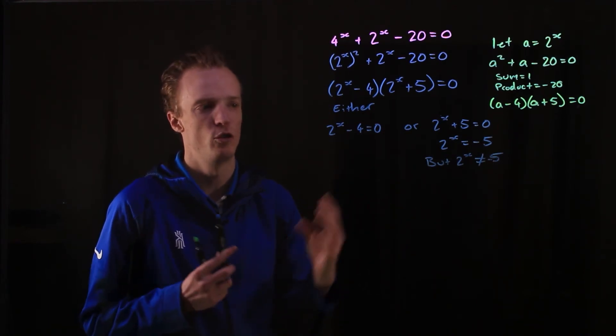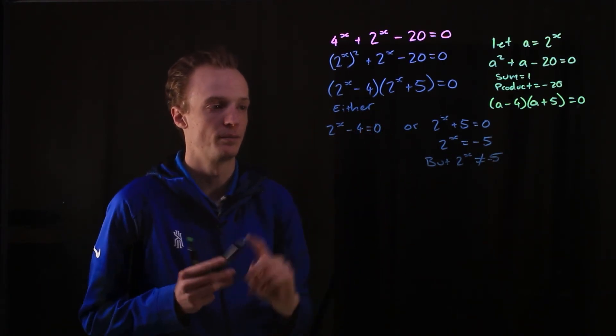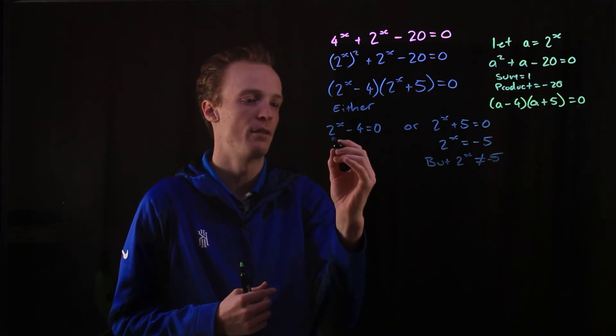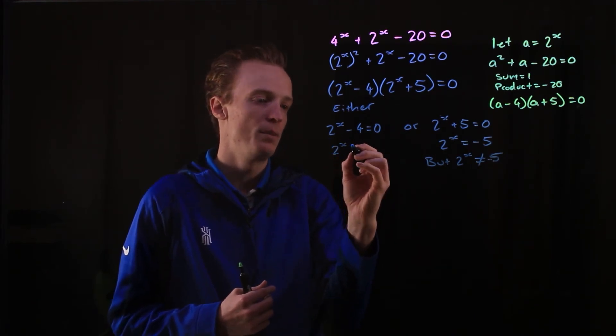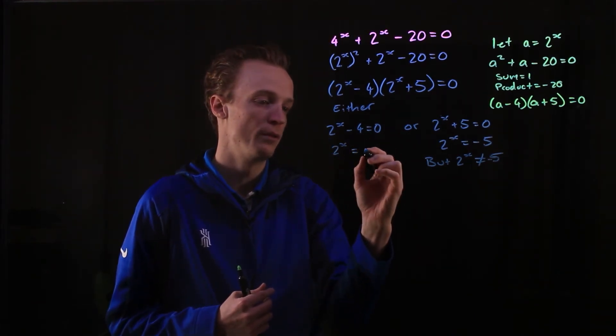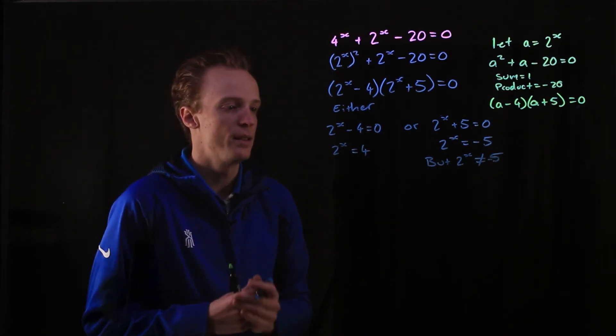So it means that we've only got one solution, or potentially one solution, that's this side. So if I now look at this side and rearrange here, 2^x will equal positive 4. And now I can go about equating my indices.